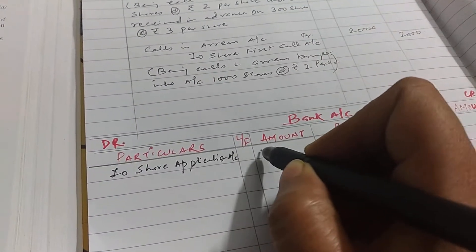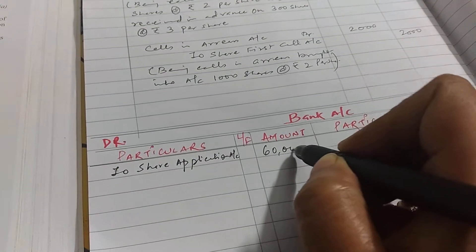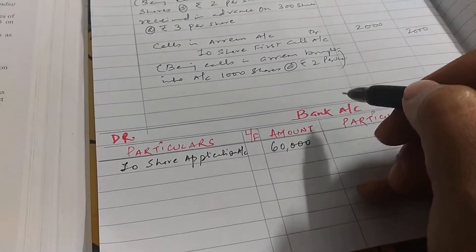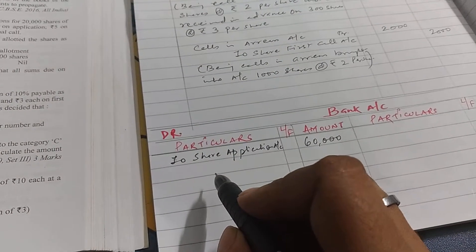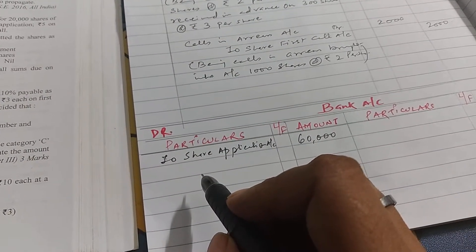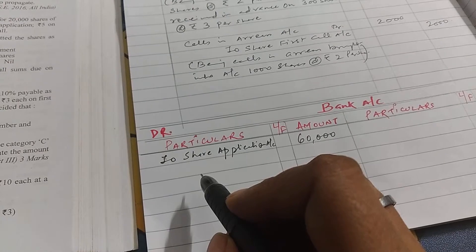How much amount is given? 60,000. So we have to write 60,000.